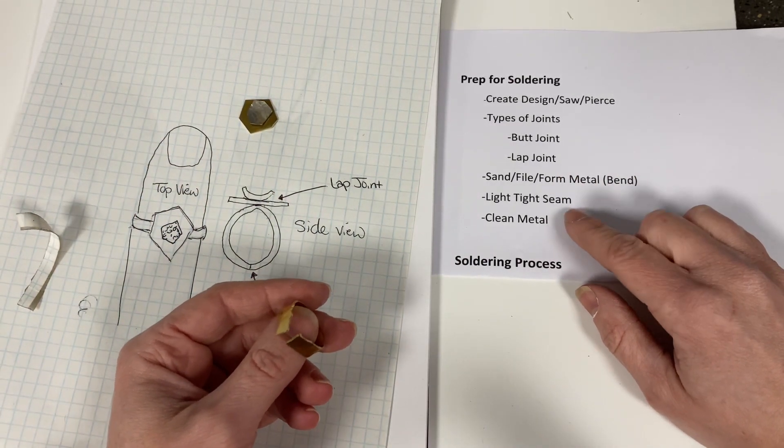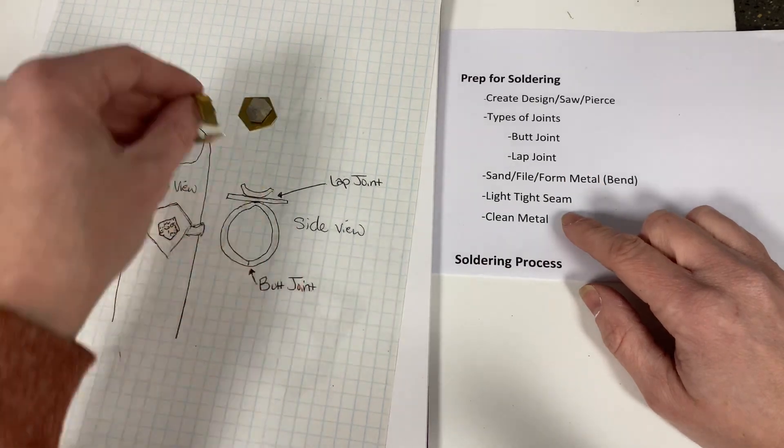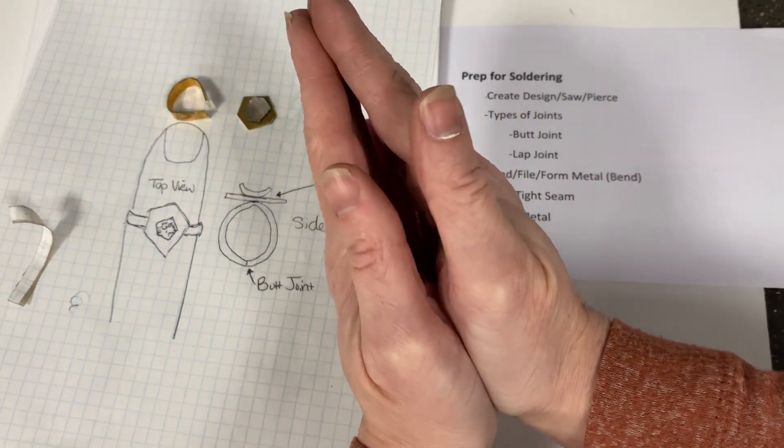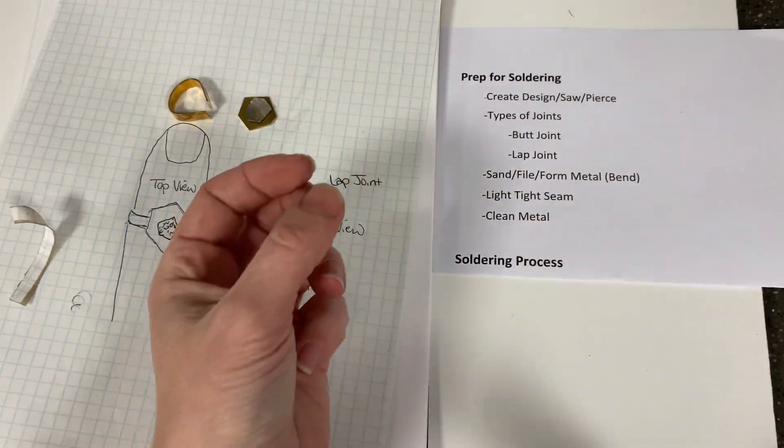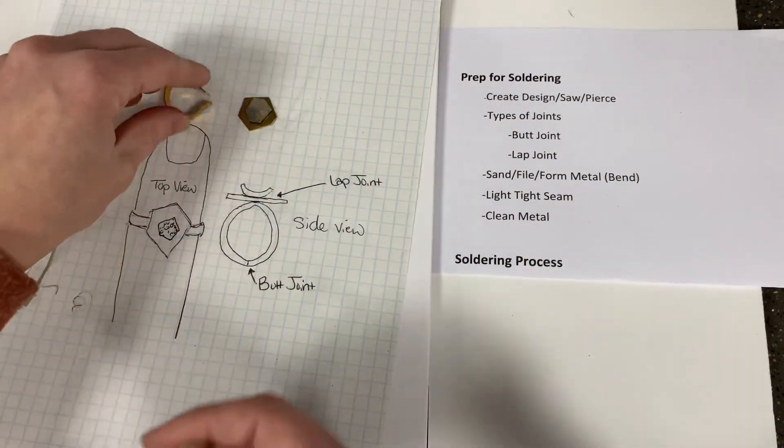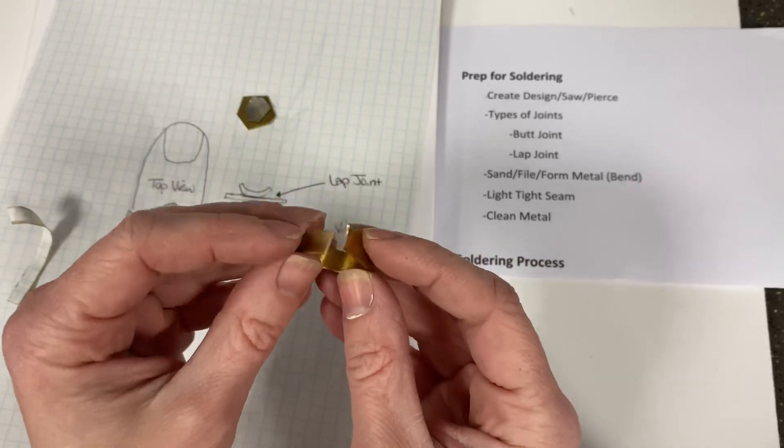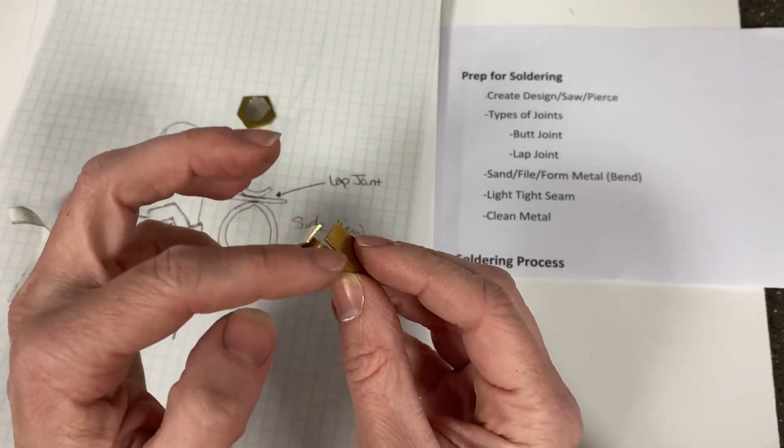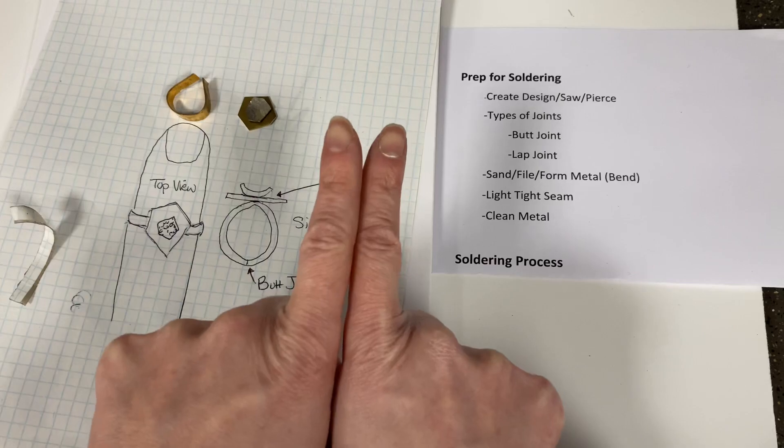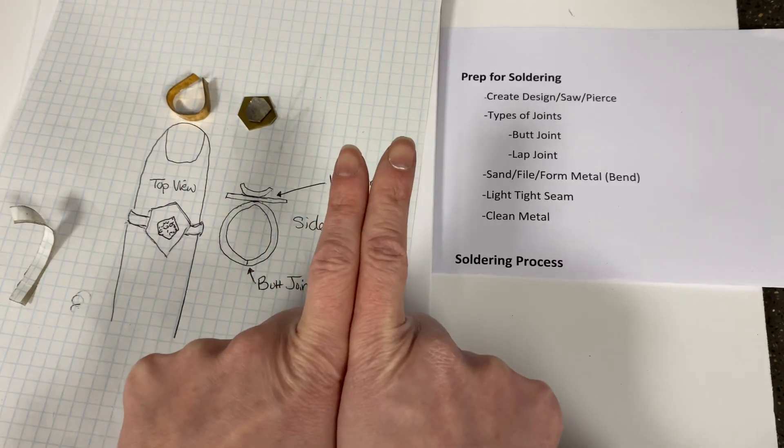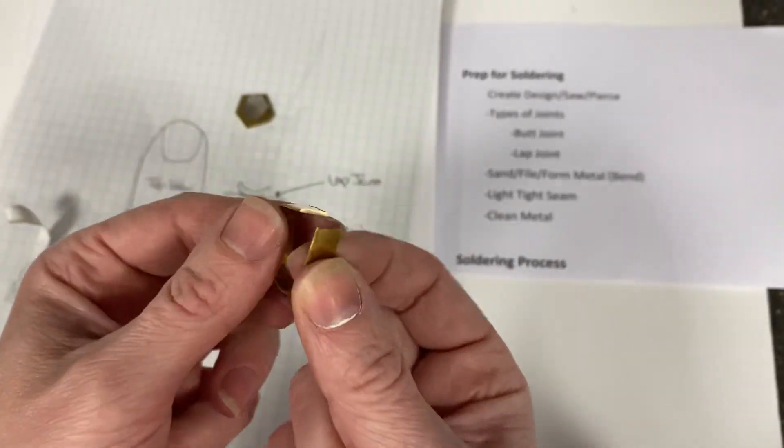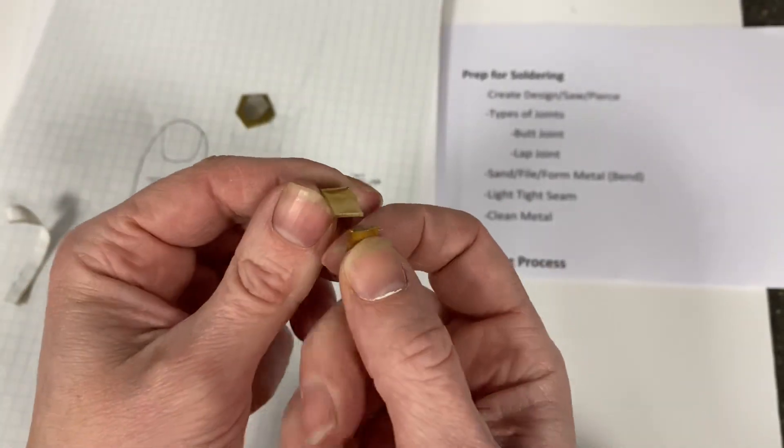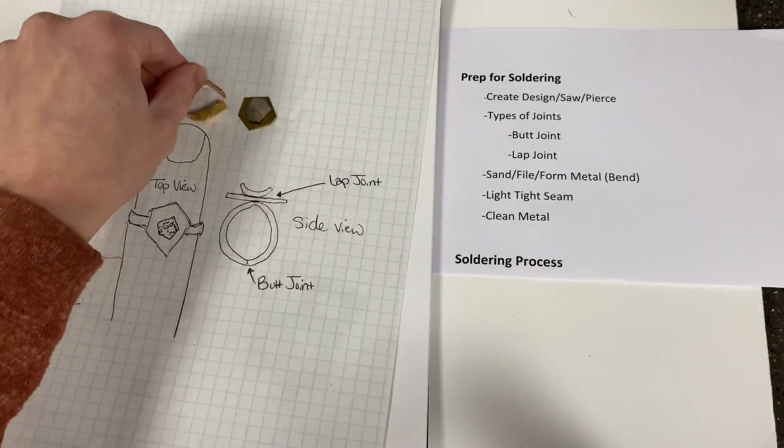A light tight seam. When you're soldering, you cannot let any light through. So if I have spaces like this with my metal, then I'm really not going to get a great solder seam. And especially for a ring, you want both ends to perfectly sit next to each other. So it should look like this, not like this. In order to do that, you might have to open it up a little, you might have to file, open it up, sand it, press it back together again to make sure it really sticks well.